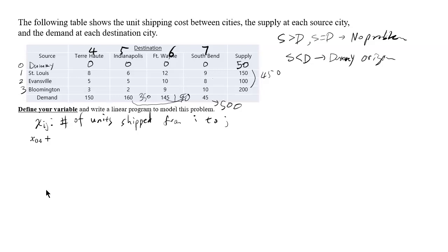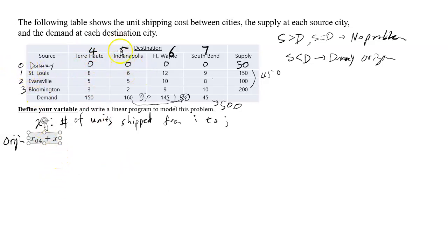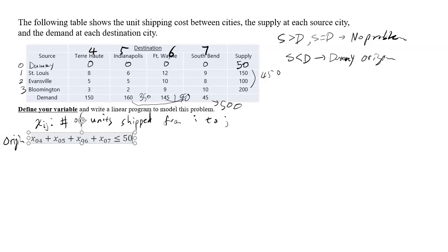For each origin, the number of units shipped out of that origin cannot be more than what it can supply, so these will be all inequalities. X04 is between Dummy and Terre Haute, X05 is Dummy to Indianapolis, X06 is Dummy to Fort Wayne, X07 is Dummy to South Bend. That sum has to be less than or equal to 50 — that's for the dummy.